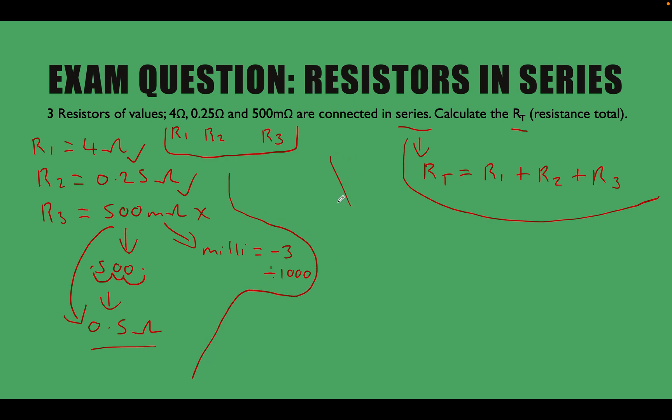And then down here now, let's do our actual calculation, because I think we're ready to do it. We've got our values, 4 ohms, 0.25 ohms, and 0.5 ohms. So all we've got to do is write it out using our formula. Resistance total is equal to R1, which is 4 ohms, plus R2, which is 0.25 ohms,